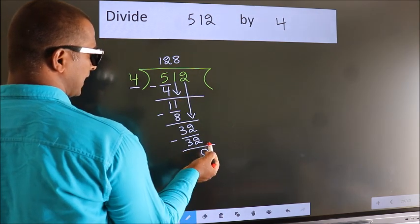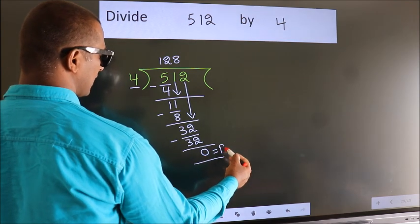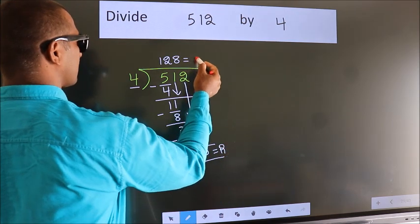No more numbers to bring it down. So, we stop here. This is our remainder. This is our quotient.